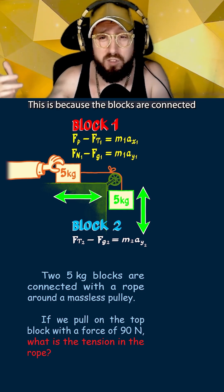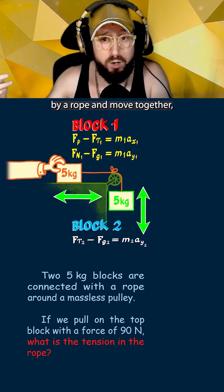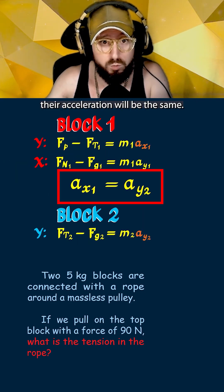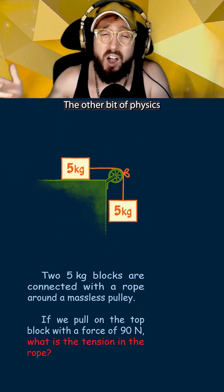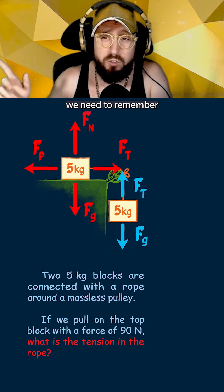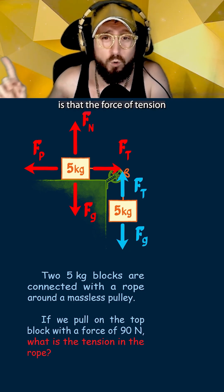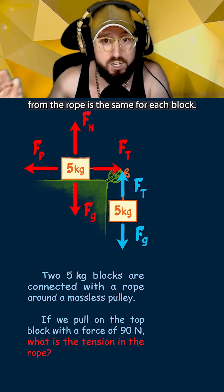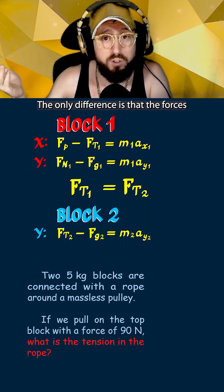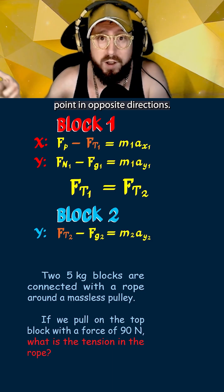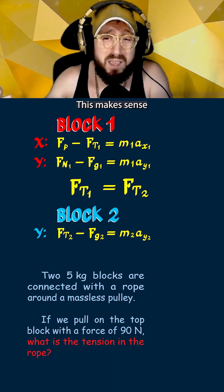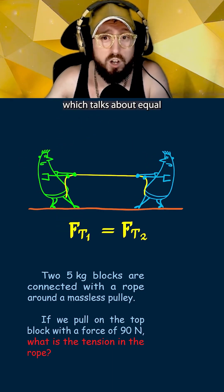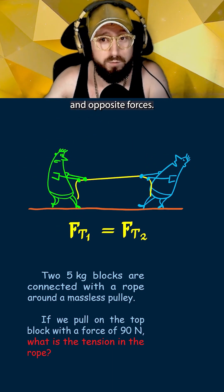This is because the blocks are connected by a rope and move together, which also means their acceleration will be the same. The other bit of physics we need to remember is that the force of tension from the rope is the same for each block — the only difference is that the forces point in opposite directions. This makes sense because of Newton's third law, which talks about equal and opposite forces.